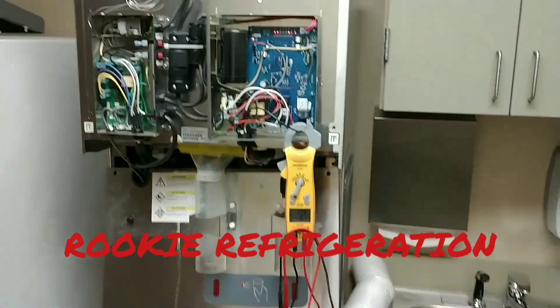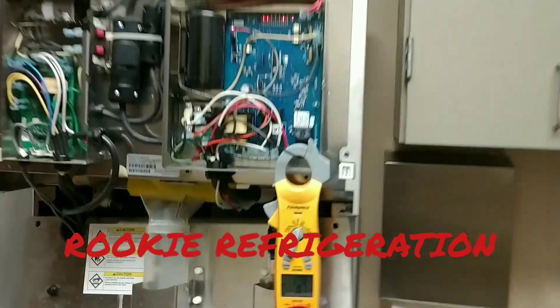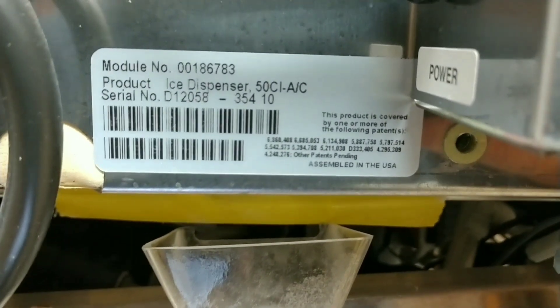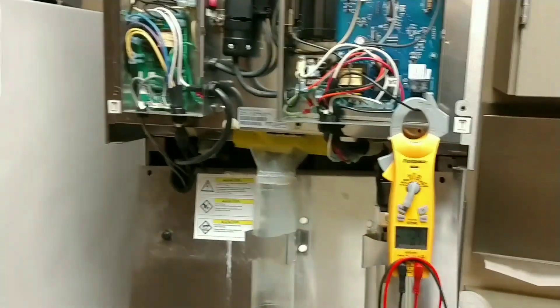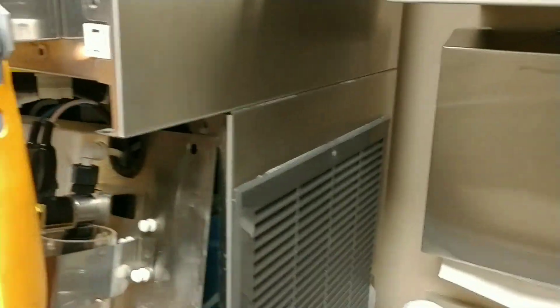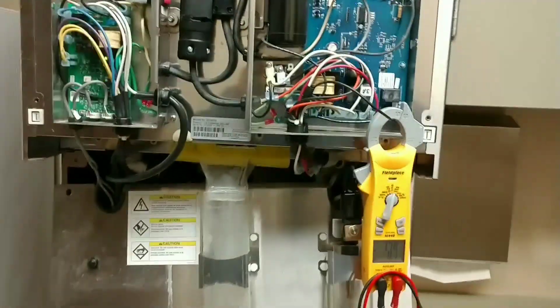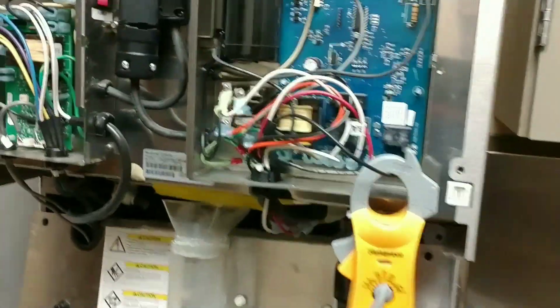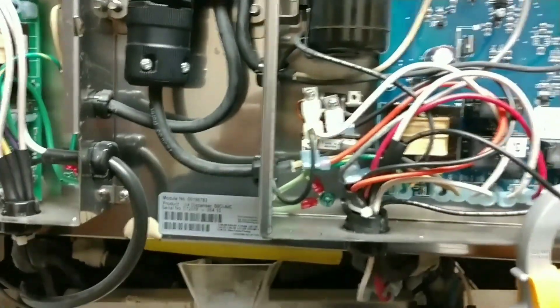Morning gents, today we have a Follett model 50CI ice machine that was not making any ice. The bin is empty. I jumped the gun here a little bit, I didn't think I was going to make a video but maybe we'll try it. When I first got here the ice machine was completely off.